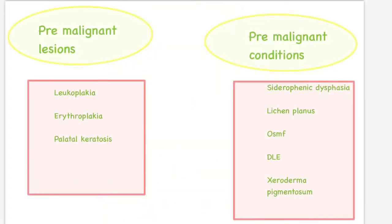Apart from this, two important terms are pre-malignant lesions and pre-malignant conditions, which are directly linked to an increased risk of oral cancers, particularly oral squamous cell carcinoma. Examples of pre-malignant lesions are leukoplakia, erythroplakia, and palatal keratosis. If any of these lesions are present in a person, there are higher chances of developing malignancy in a few years.